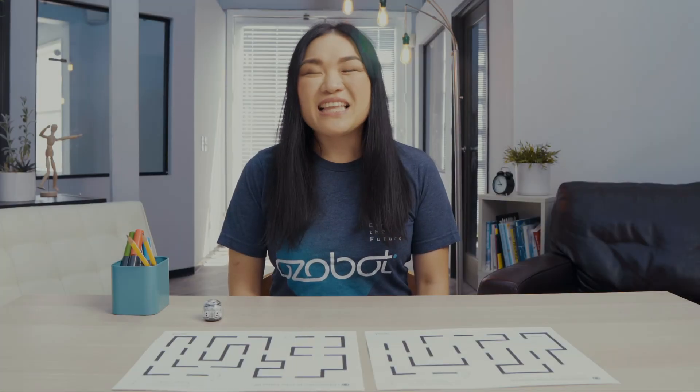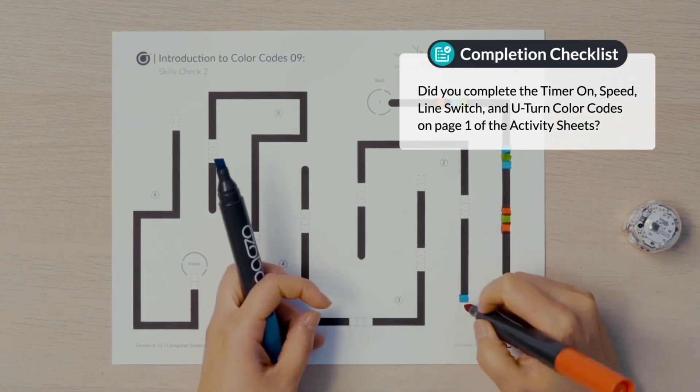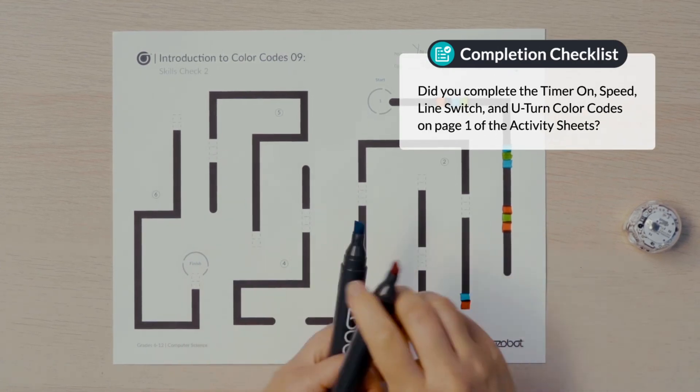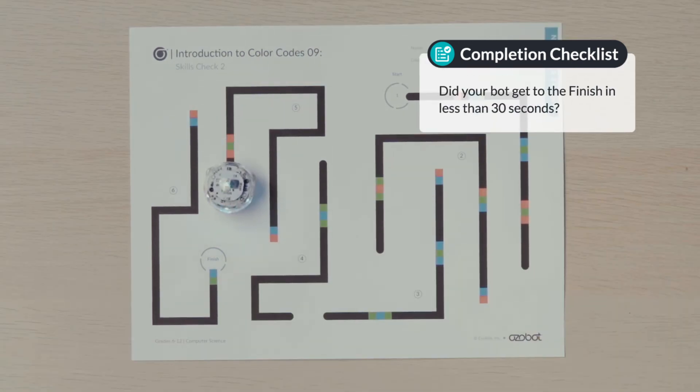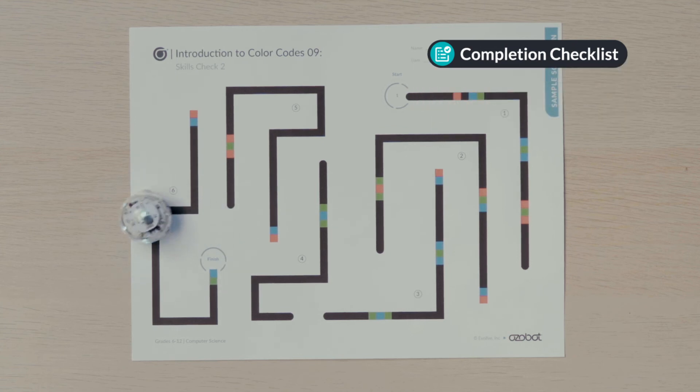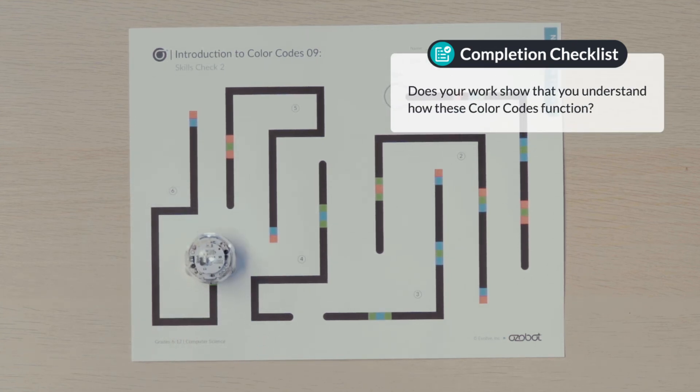Well done! Let's make sure you've completed the activity. Did you complete the timer on, speed, line switch, and U-turn color codes on page one of the activity sheets? Did your bot get to the finish in less than 30 seconds? Did you debug your code? Does your work show how you understand how these color codes function?